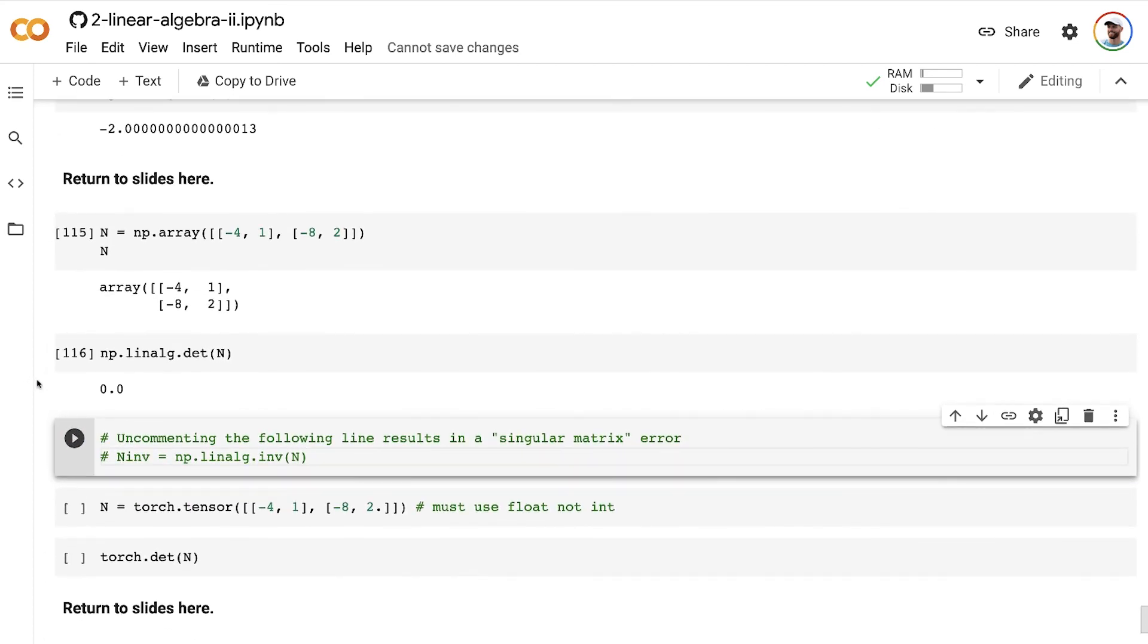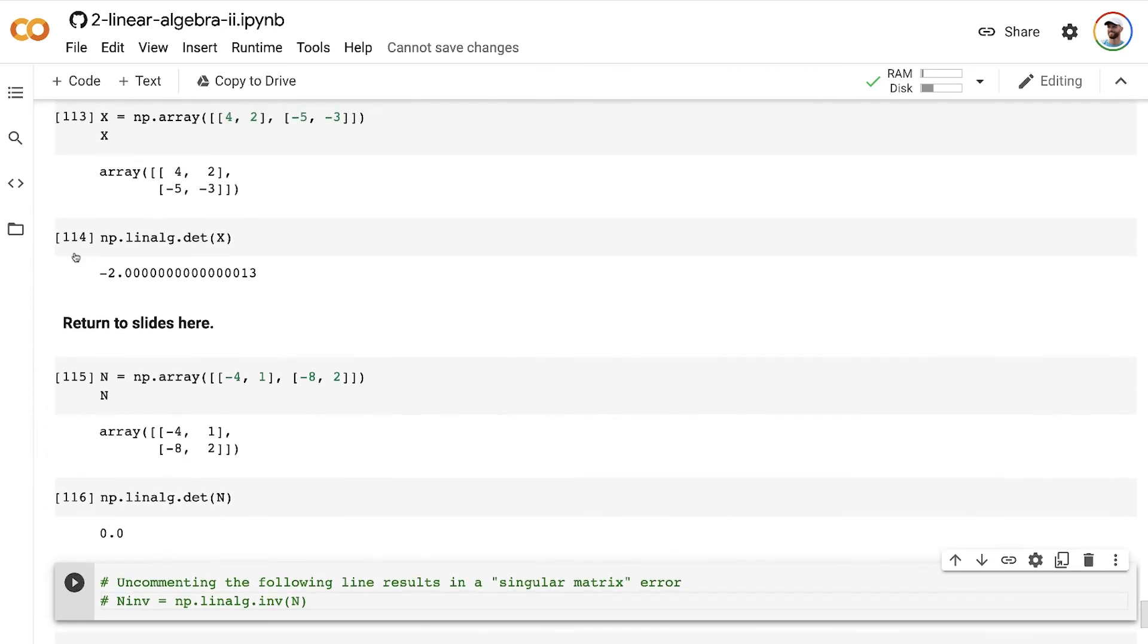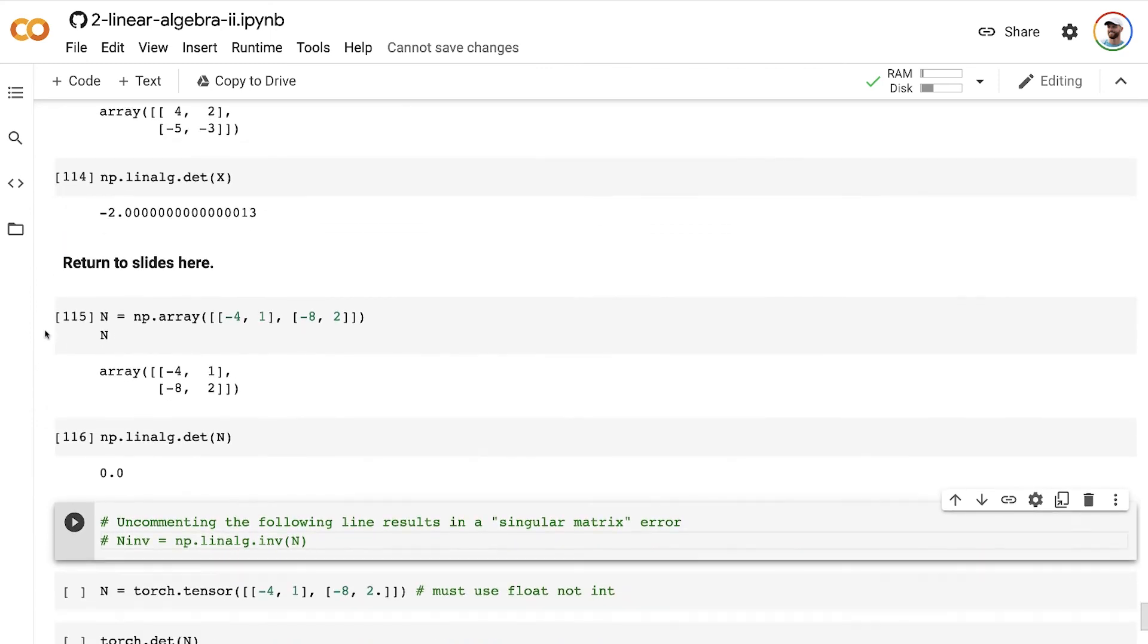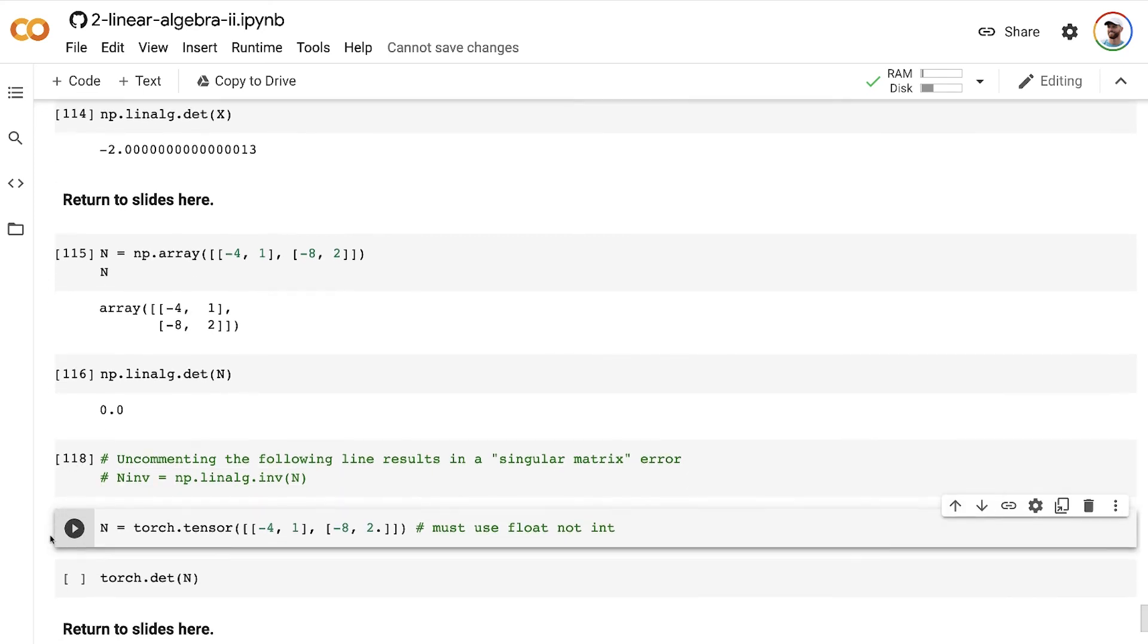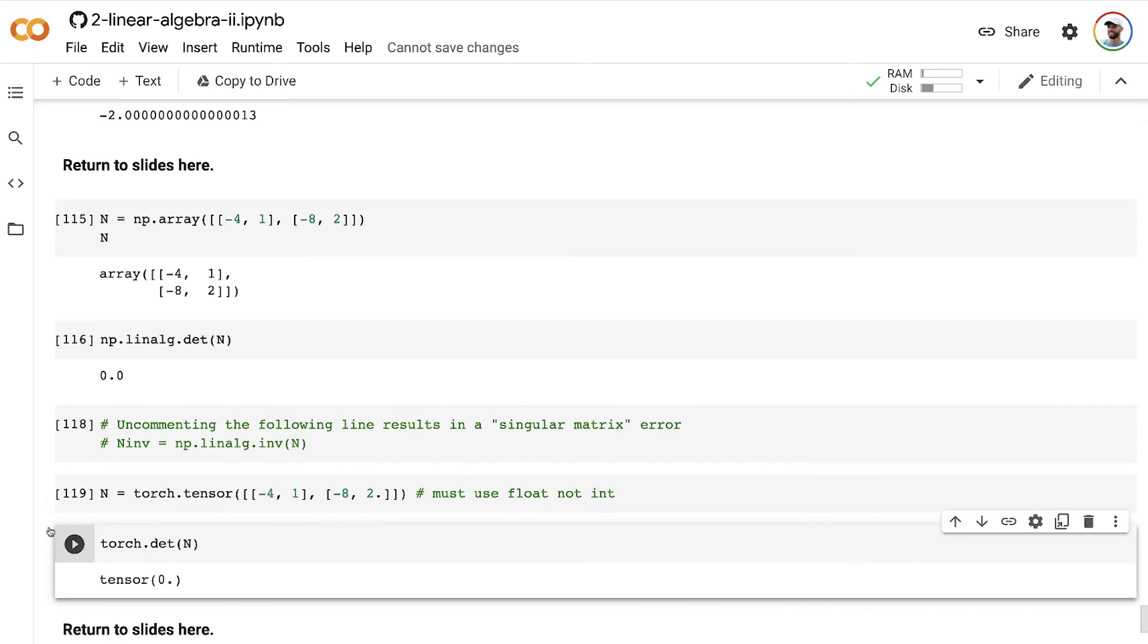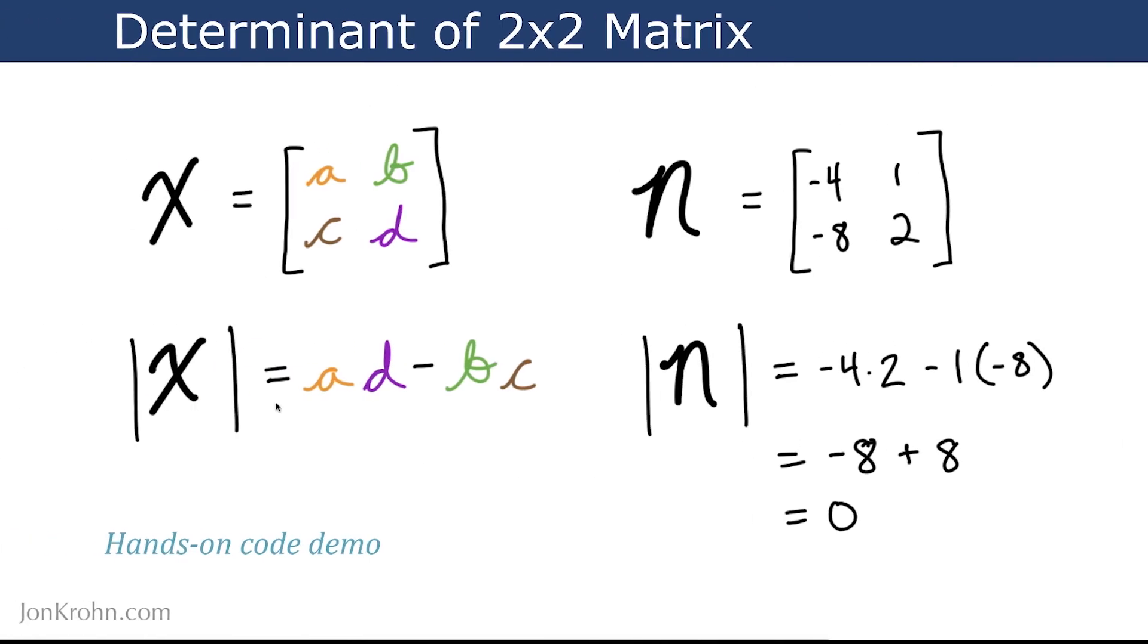And just so that you know how to calculate determinants in PyTorch as well, PyTorch being, I think it's becoming clear, a favorite library of mine. When we calculate the determinant of it using the det method from PyTorch, we get this scalar value of 0, which is the same as we had in NumPy and the same as we calculated by hand.